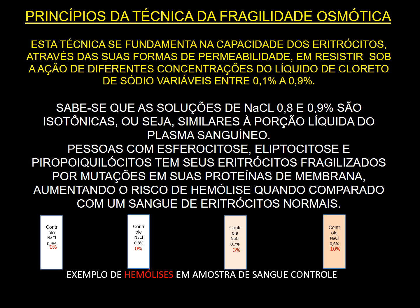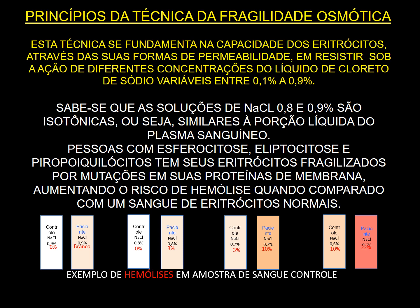Agora, fazendo uma comparação de um paciente ao lado de cada um desses tubos. Esta situação mostra a comparação da amostra de um paciente com esferocitose. Observem a diferença de hemólise — isso é uma representação esquemática, mas que na verdade encontramos no tubo quando fazemos o teste de fragilidade osmótica. A partir de agora, vou detalhar como se faz a preparação das soluções e depois o teste.